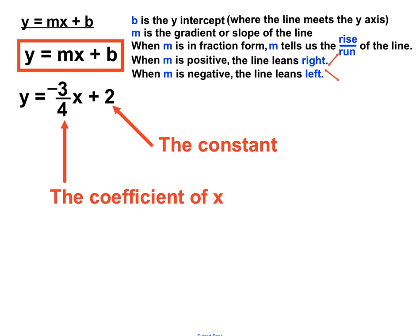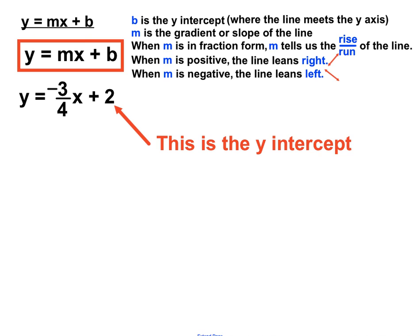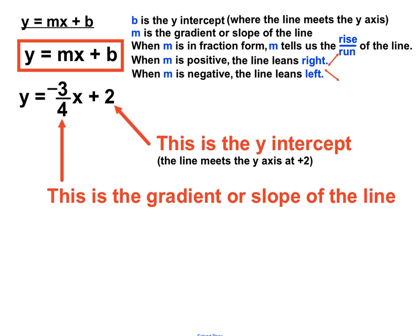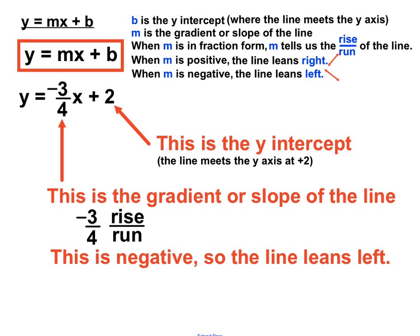The constant of that equation is 2, and the coefficient of x is minus 3 quarters. The constant tells us the y-intercept — this line crosses the y-axis at 2. The gradient is minus 3 quarters. Focusing on the 3 quarters part: the slope has a rise of 3 for every 4 that it goes across, making it a bit flatter. And since this is a negative gradient — a negative value for m — this line would lean to the left if plotted on a number plane.